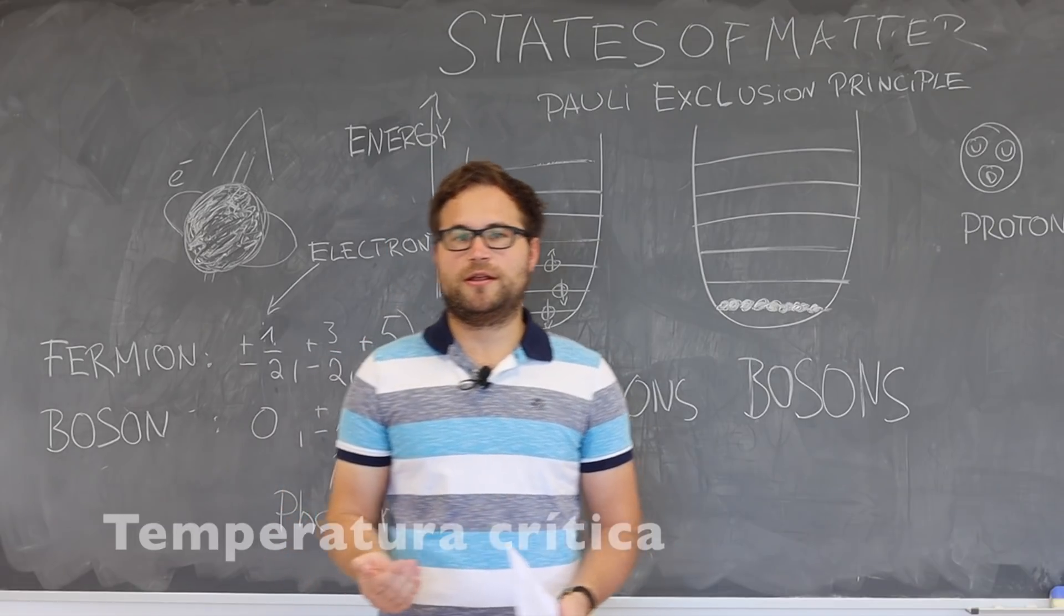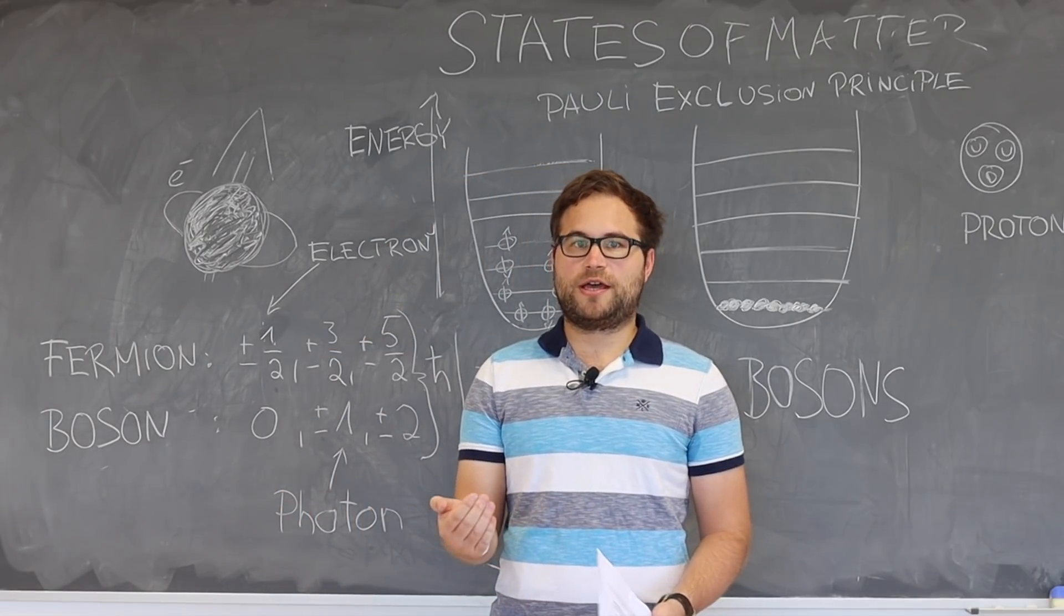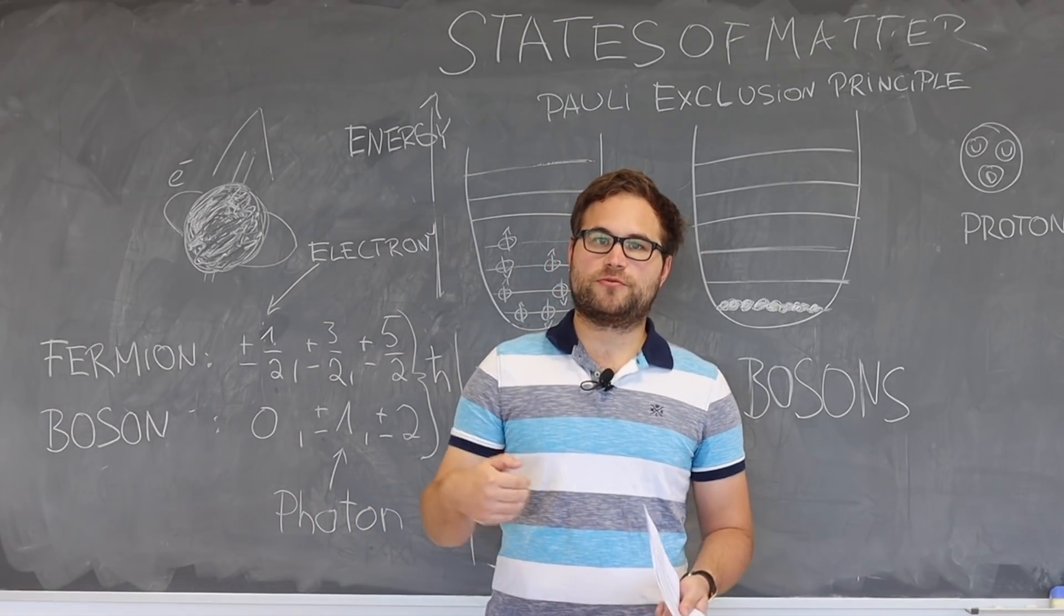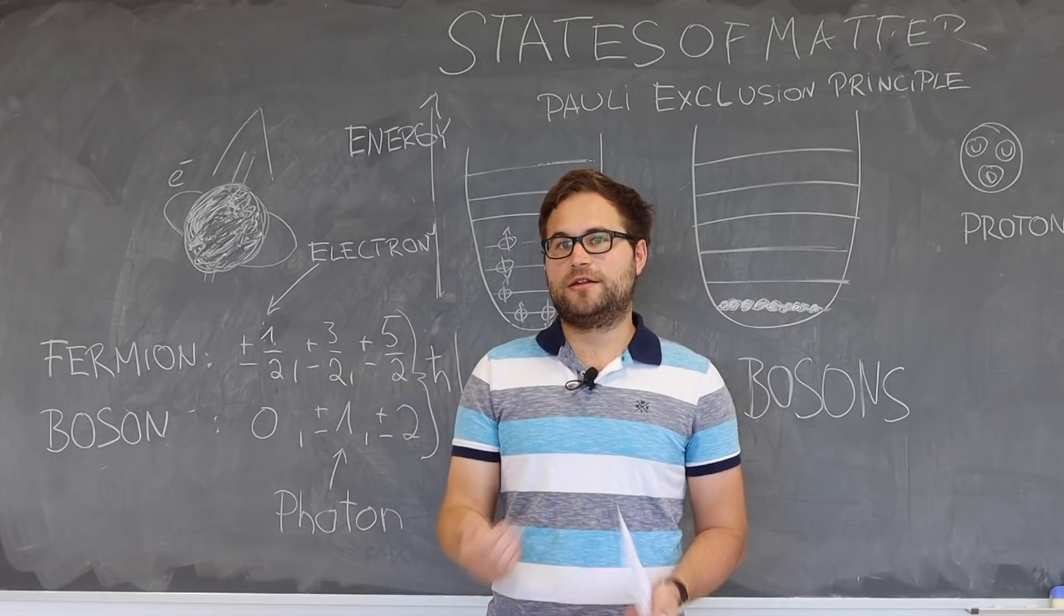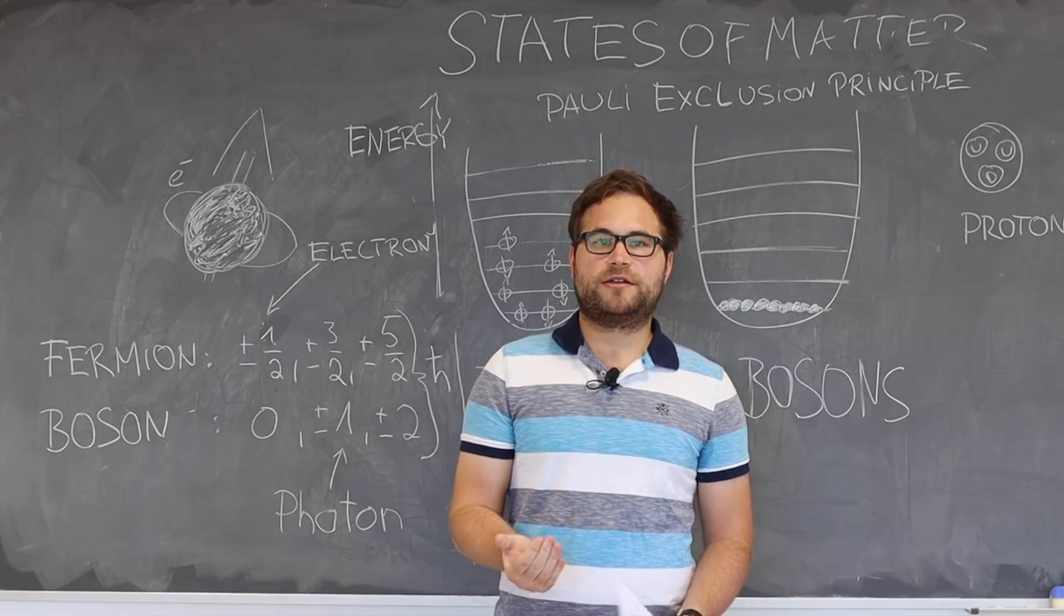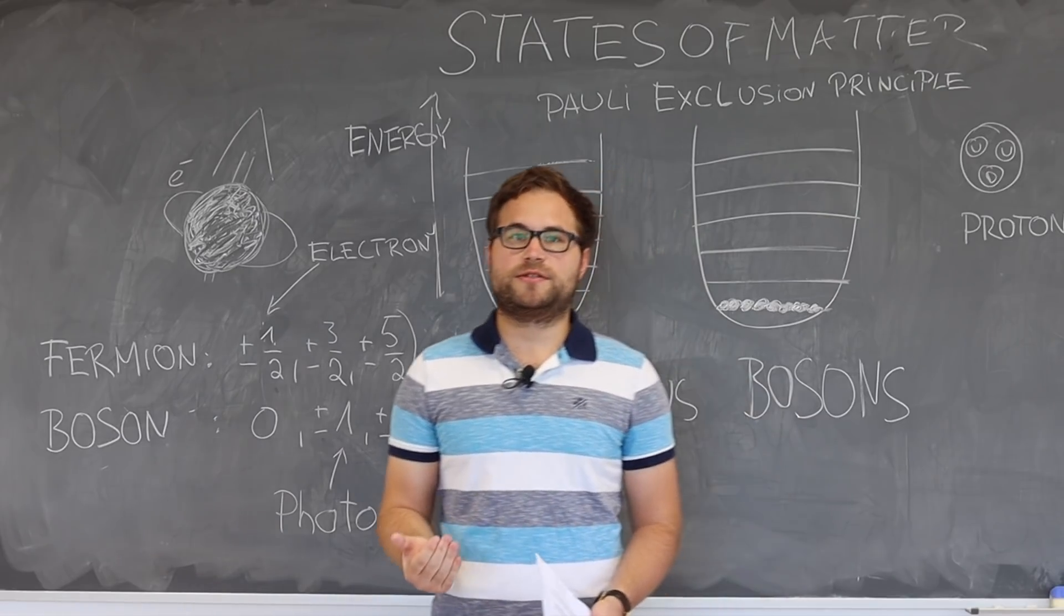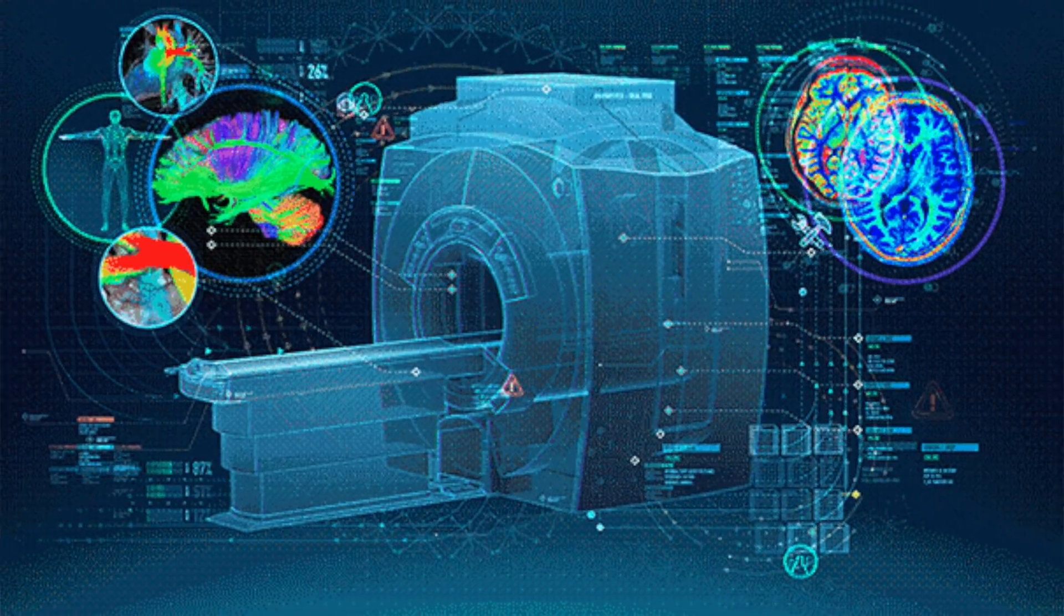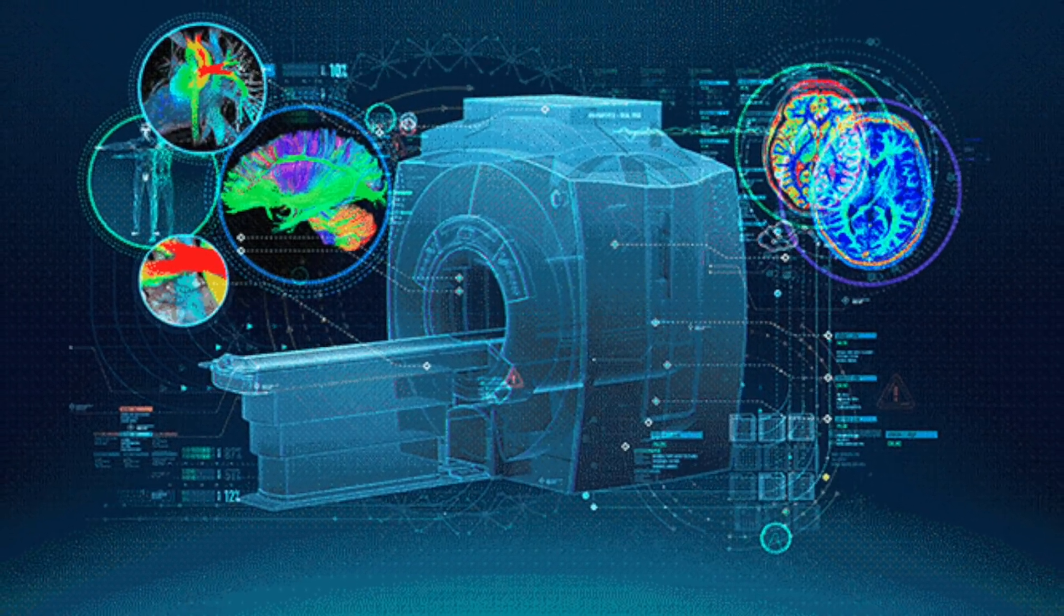This temperature is material specific and called the critical temperature. Below that temperature, you can send electrons through the superconducting material without any loss because the electrical resistivity is zero. Superconducting materials are commonly used in medical applications, for example magnetic resonance imaging.